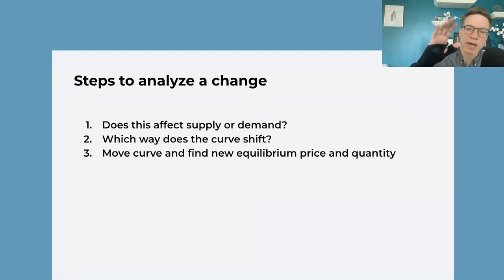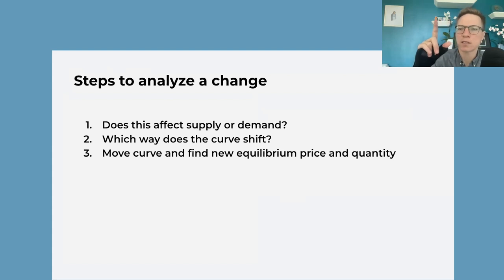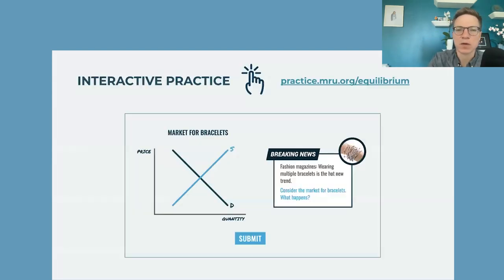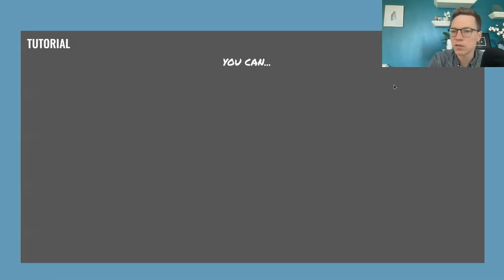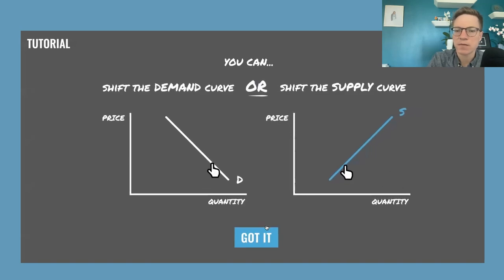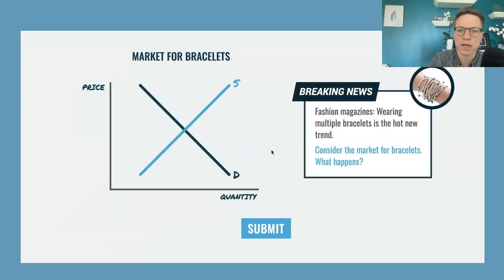If you're analyzing what's going to happen to an equilibrium price and quantity, this is what students have to ask themselves: an event happens — is this going to move supply? Is this going to move demand? Which way is it going to move those? Then you graph it, move the demand curve, and see what happens to the price and quantity. We have a ton of interactive practice — definitely three sets of this plus holiday additions, so lots and lots of practice for the core supply and demand activity.